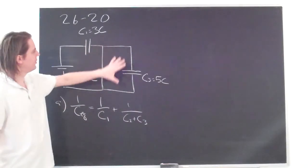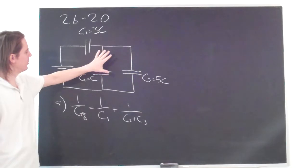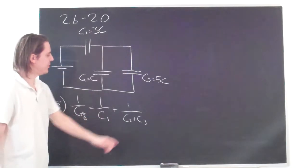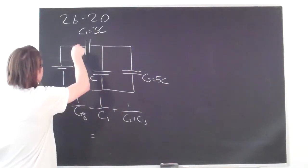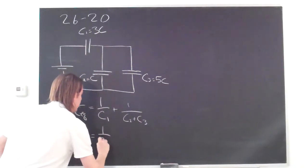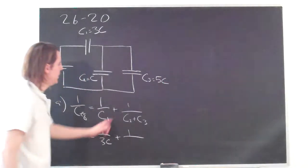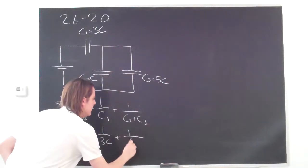So this one we can sort of do in all one step, because it's really just one series and one parallel. And for the parallel, you just add. So that's what it would look like. So it would be 1 over C1 is 1 over 3C, plus 1 over C2 plus C3 is 6C.